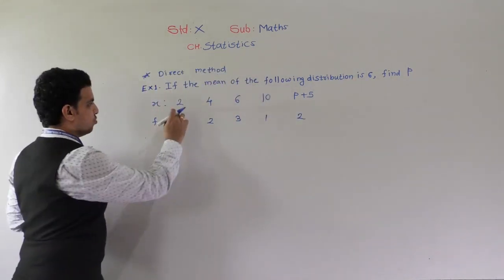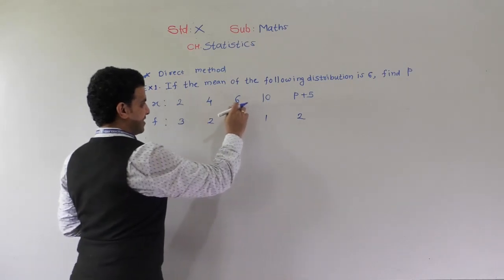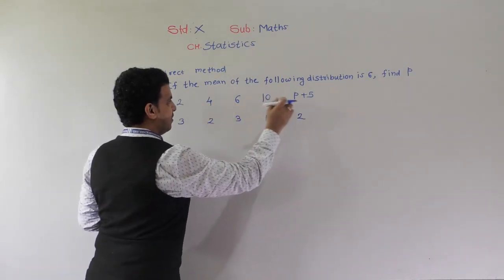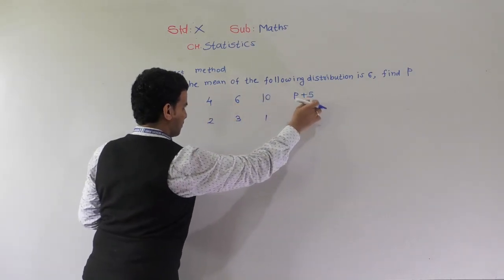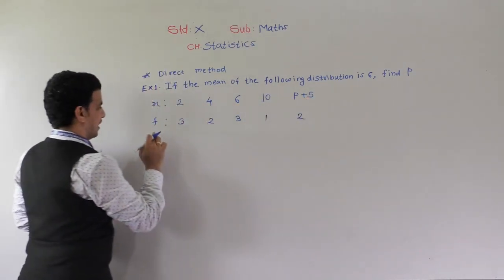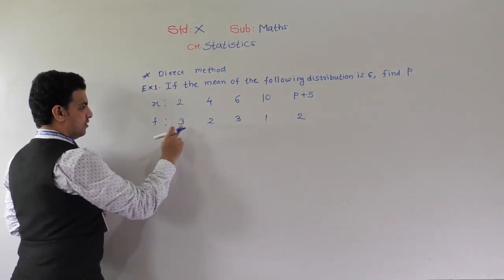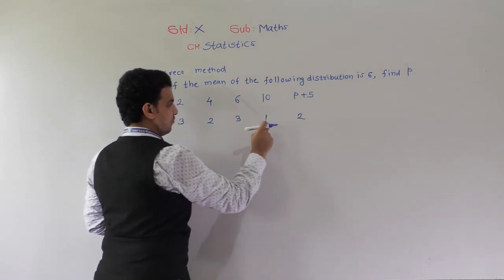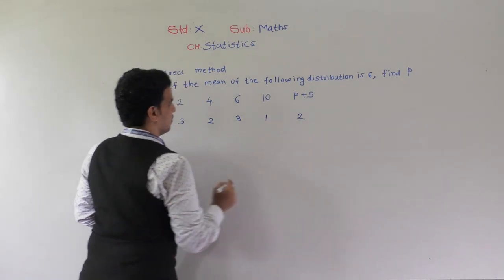So xi is given: 2, 4, 6, 10, and p plus 5. And fi is given: 3, 2, 3, 1, 2.